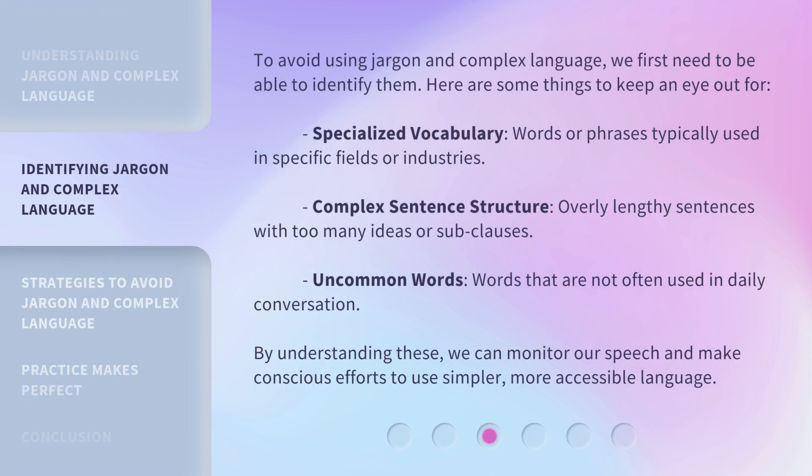To avoid using jargon and complex language, we first need to be able to identify them. Here are some things to keep an eye out for: specialized vocabulary — words or phrases typically used in specific fields or industries; complex sentence structure — overly lengthy sentences with too many ideas or sub-clauses; and uncommon words — words that are not often used in daily conversation. By understanding these, we can monitor our speech and make conscious efforts to use simpler, more accessible language.